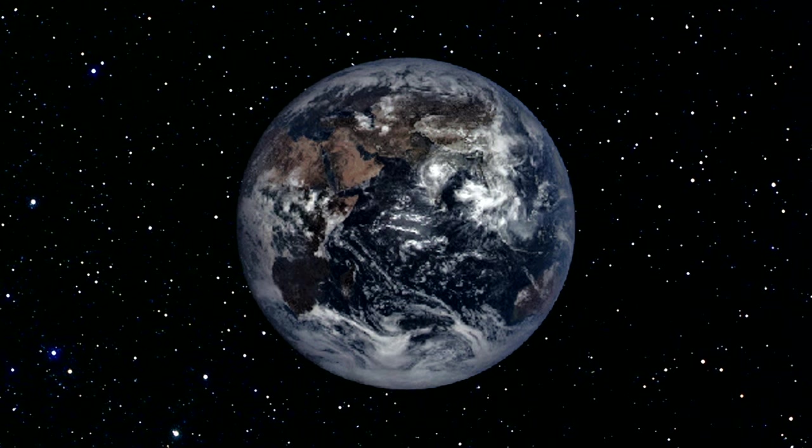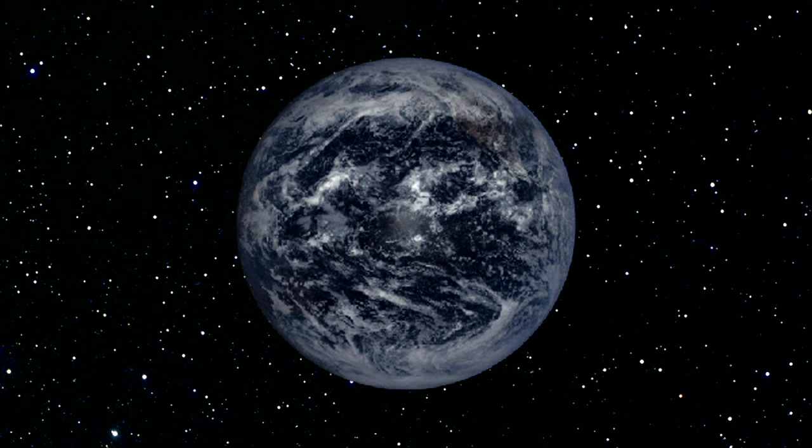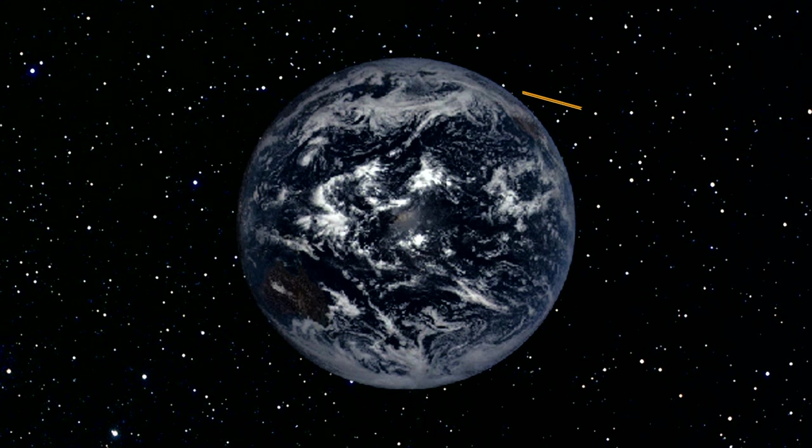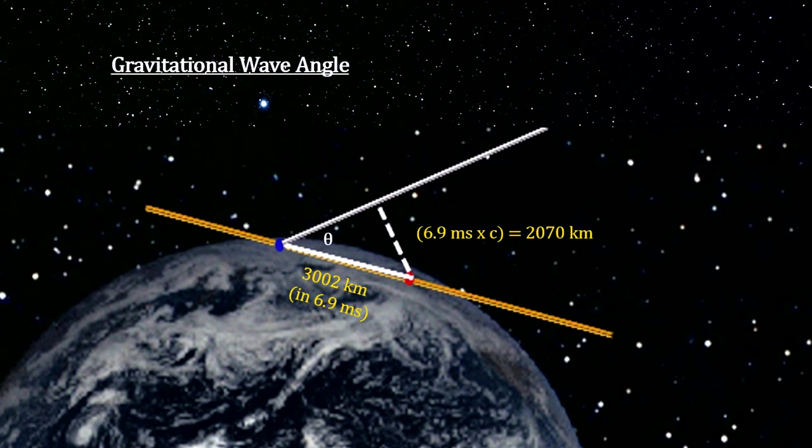The wave information does not tell us in which direction it came from because each interferometer is a whole sky monitor with very little directional information. But having two detectors does give us some directional data. For example, if the wave came in parallel to the line between the two sites, the signals would have registered at the exact same time. If the wave was perpendicular to the line, we would have seen a time delay of 10 milliseconds because the wave travels 3,002 kilometers through the Earth at the speed of light. What we detected was a wave that came in at an angle that caused a delay of 6.9 milliseconds. The dotted line represents the distance the wave had to travel for a piece of it to reach the Hanford interferometer. A little trigonometry gives us the angle.